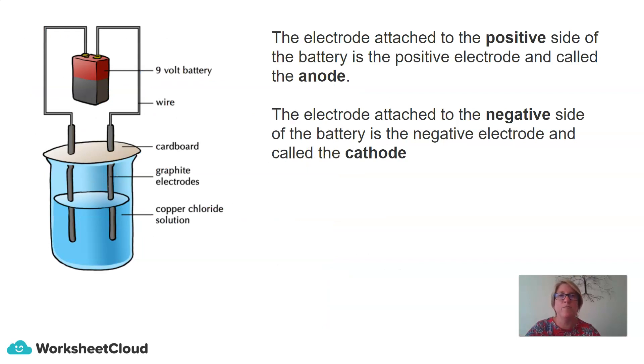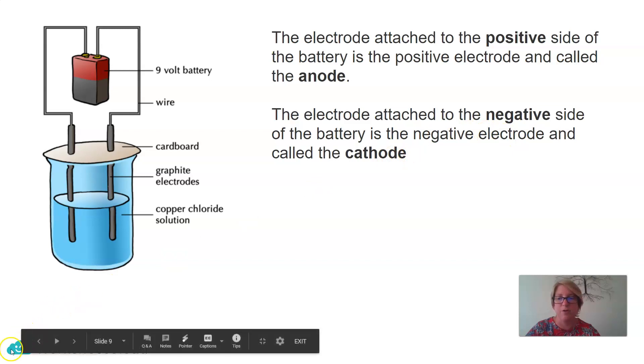So just as a reminder going forward for some terms that we might mention later on, the electrode attached to the positive side of the battery is the positive electrode and we call that the anode, and the electrode that's attached to the negative side of the battery is the negative electrode and we call that the cathode.